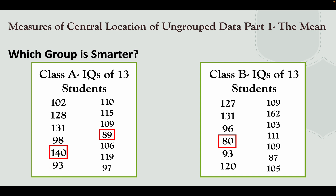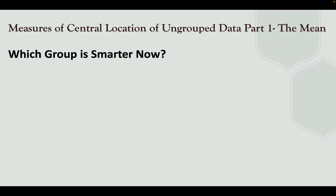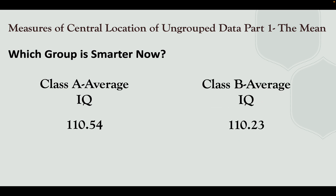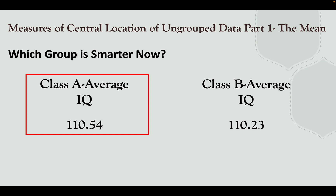Looking at the highest score, Class A has 140, while Class B has 162. We usually tend to say that Class B is much smarter because the highest score is 162. But when we look at the average IQ, Class A has 110.54 while Class B has 110.23. So that means Class A is actually smarter than Class B — they only differ in decimals.